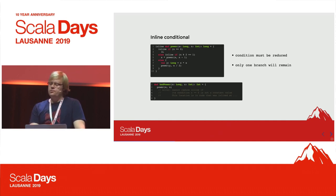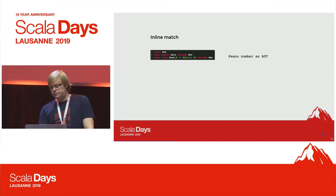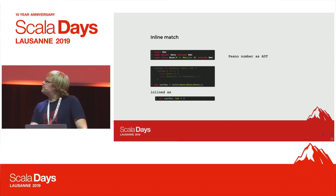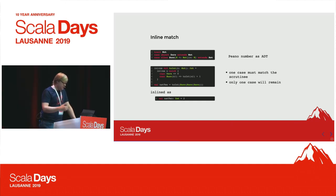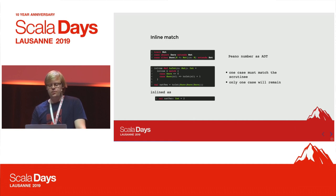This doesn't only apply to if-then-else, but can also be used for pattern matching with inline match. Let's take a simple encoding of Peano numbers as an ADT, where a natural number has two cases: zero or a successor of another natural. We use it to create a toInt method that should result, after inlining, in just the value two for successor(successor(zero)). We put the inline before the match, which means one of those branches must match whenever we inline. We match twice over the successor, then once on zero, and constant-fold the plus operation on Int to create two.